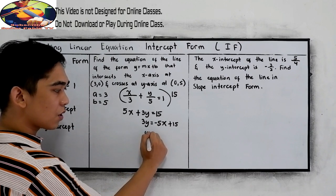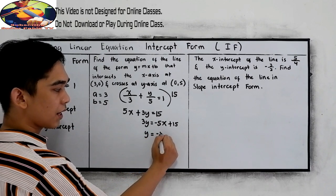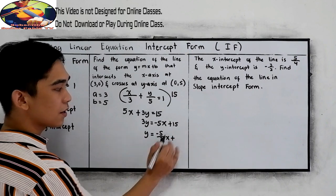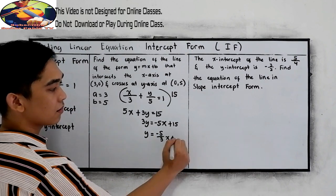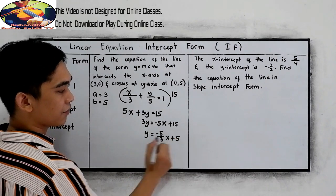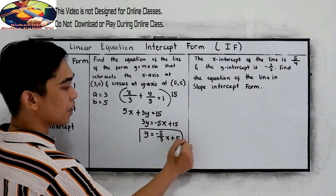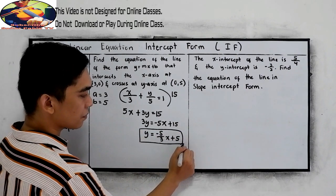Now, divide by 3. That will give us negative 5 over 3x, plus 15 divided by 3, that is 5. So this will be our equation.